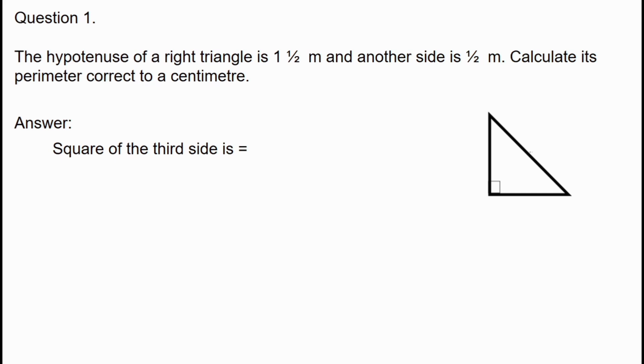The hypotenuse square is one and a half squared, and the third side is minus the right triangle. This formula is a squared minus b squared. This is a squared minus b squared. We have learned that identity.